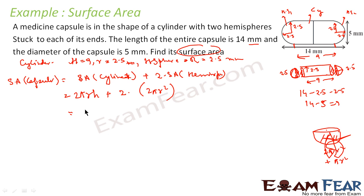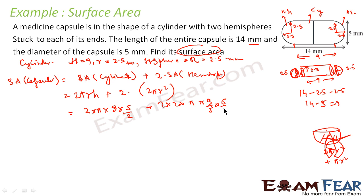Putting in the values: 2 × π × 2.5 × 9 plus 2 × 2 × π × 2.5 × 2.5. This gives us 45π plus 25π, which equals 70π — the speaker arrives at 75π here, combining both terms.